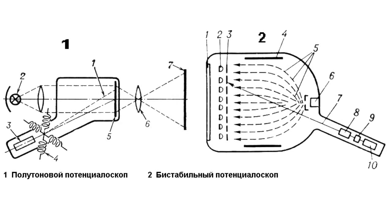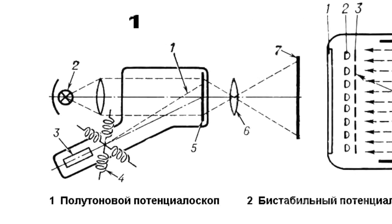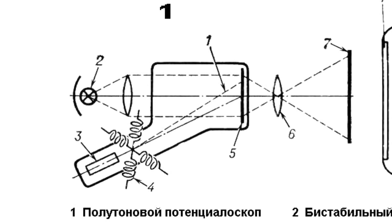These are halftone and bistable storage tubes. Halftone tubes have a negative target potential with respect to the cathode. In this case, electrons do not get on the target and the image can be saved on the screen for several minutes.